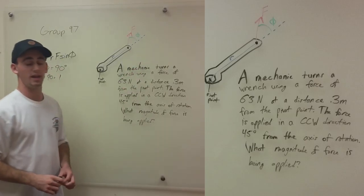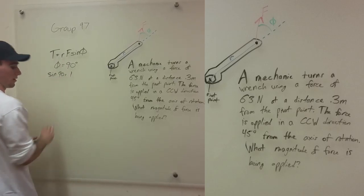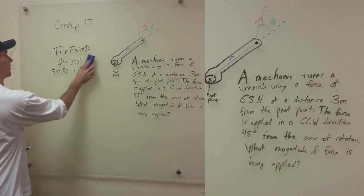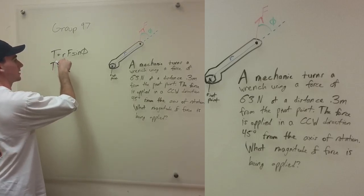So the problem reads, The mechanic turns a wrench using a force of 63 newtons at a distance 3 tenths of a meter from the pivot point. The force is applied in a counterclockwise direction 45 degrees from the axis of rotation. What magnitude of torque is being applied?